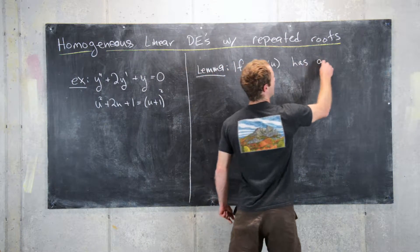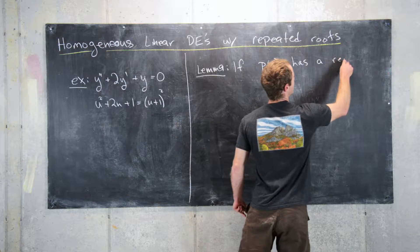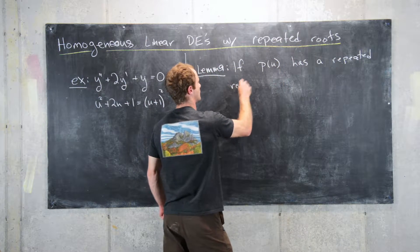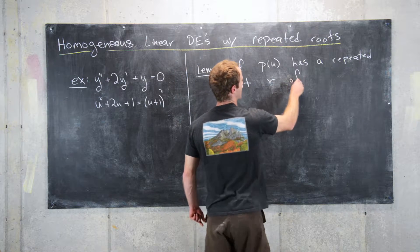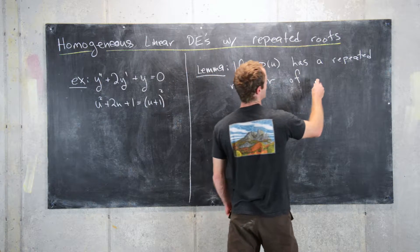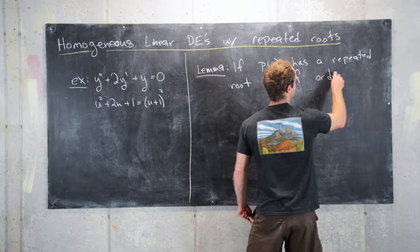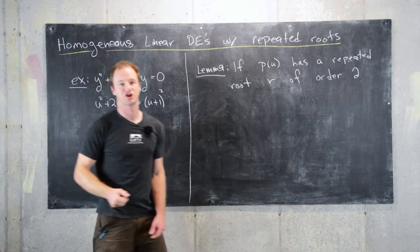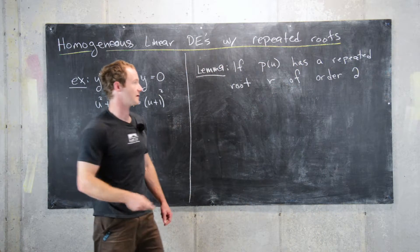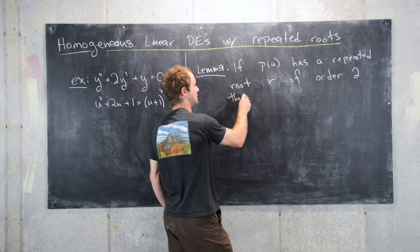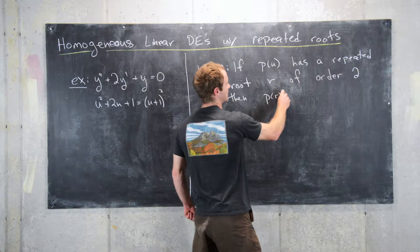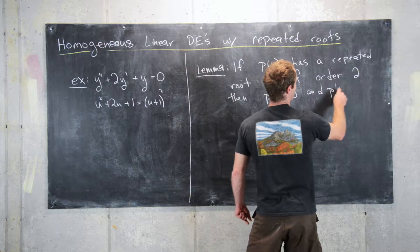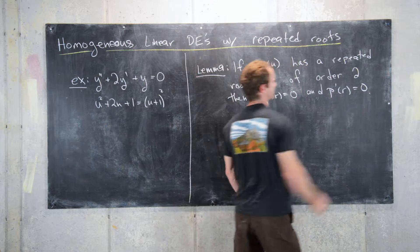If a polynomial has a repeated root r of maybe order 2 — and again, this generalizes to order n as well — then p of r equals 0 and p prime of r also equals 0.